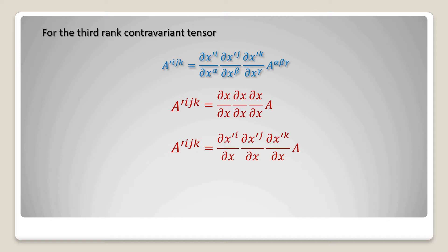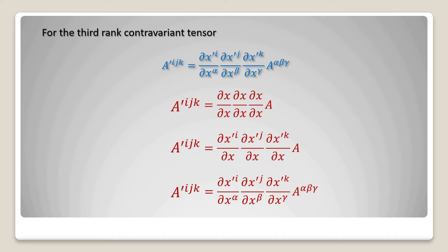We have to write all the primed terms in the numerator because it is a contravariant tensor. In the next step, a prime ijk equals del x prime i divided by del x alpha, del x prime j divided by del x beta, and del x prime k divided by del x gamma, into a upper suffix alpha beta gamma. Alpha beta gamma will be in the upper suffix because this is a contravariant tensor, and can be replaced by any other suffix other than ijk — such as abc, pqr, or lmn. Dash terms will be in the numerator and non-dash terms in the denominator.